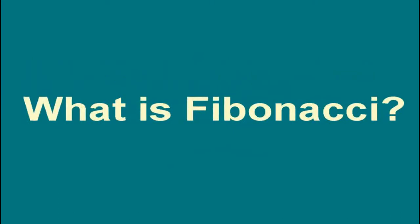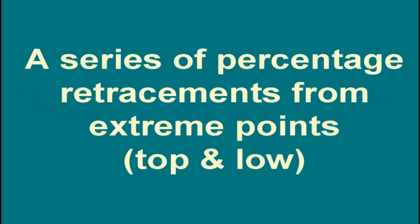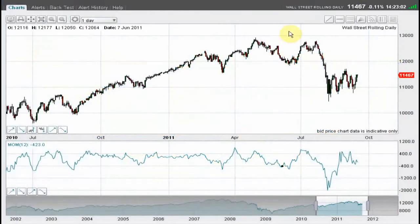So what is Fibonacci? What do we mean by it? Well, it's really a series of percentage retracements from extreme points — in other words, from a top and from a low. The spread betting platform that you use will have one. All the very hard work is done for us by the software.